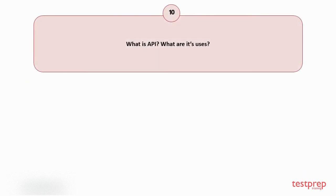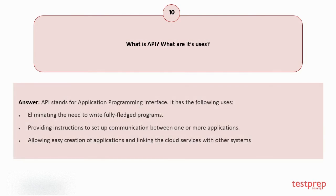Question number ten: What is API and what are its uses? API stands for Application Programming Interface. Its uses include: one, eliminating the need to write fully fledged programs; two, providing instructions to set up communication between one or more applications; three, allowing easy creation of applications and linking cloud services with other systems.